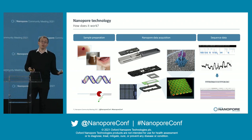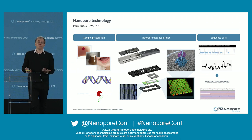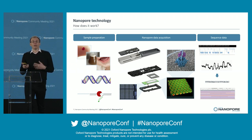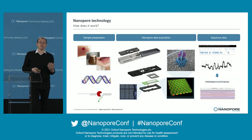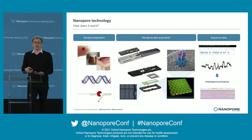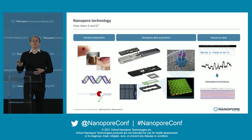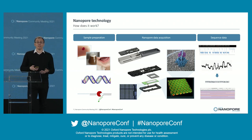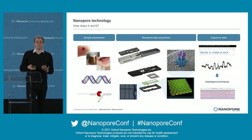Obviously it's not just one Nanopore — we have an array of many, many Nanopores in the flow cell. They all work asynchronously, so they can work on short DNA, long DNA, pass a strand through, open up again, and take another strand. It really is a very dynamic system.